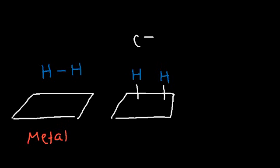And then eventually, the alkene will diffuse across the surface of the metal, where it's going to interact with the hydrogen atoms.